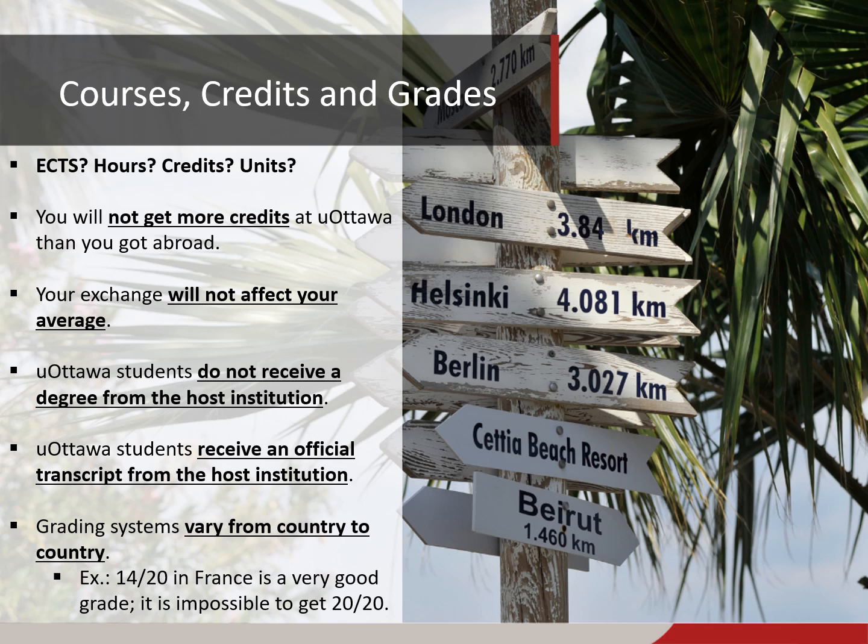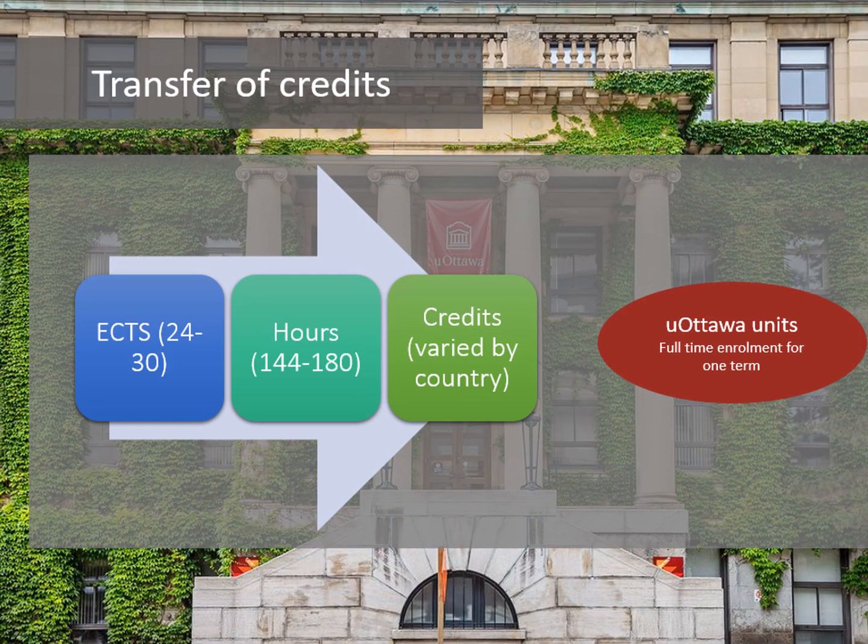Here are other important details to consider when partaking in the exchange program. When studying at your host university, you need to take a course load equivalent to a full-time course load at the University of Ottawa. For undergraduate students, four courses at uOttawa equal 12 units and five courses equal 15 units. For graduate students, two courses equal 6 units and three courses equal 9 units. You will need to take the equivalent of that when registering for courses at the host university.